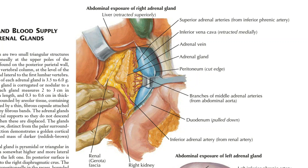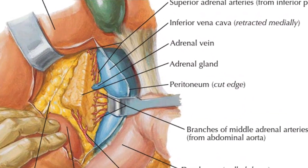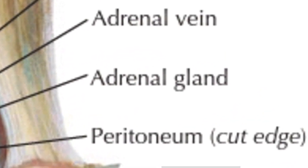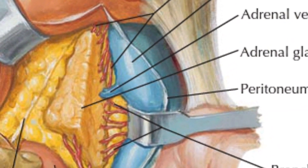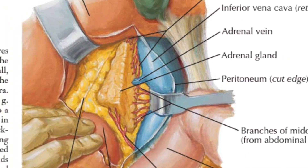Dear students and teacher friends, namaskar! I welcome you to this presentation lecture on adrenal gland anatomy and histology. At the beginning of the lecture, as you can see on the screen, I am showing you one figure. In this figure you need to find out and locate where exactly the adrenal gland is present. They have made a cut in the abdominal wall, are uplifting the peritoneum, and showing the adrenal gland — this yellow pyramidal-shaped structure.